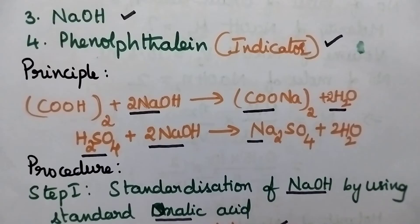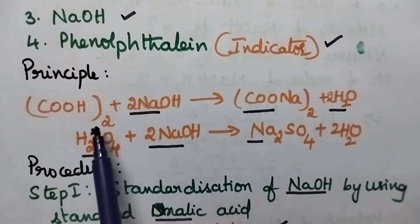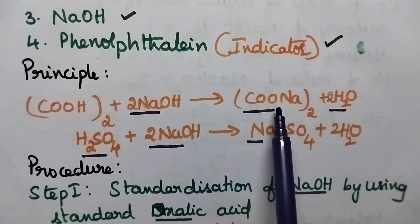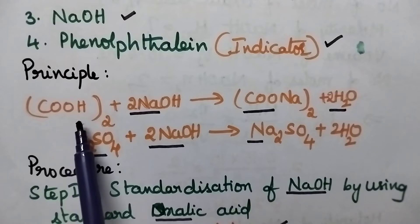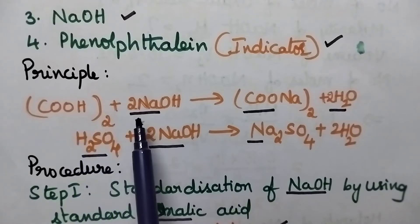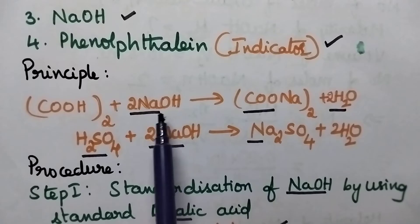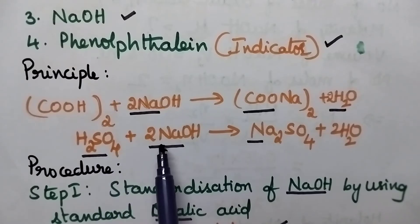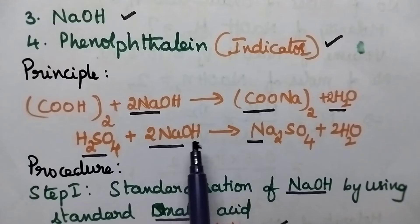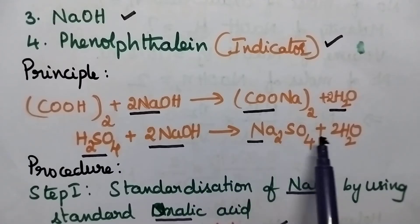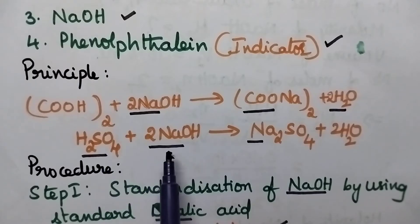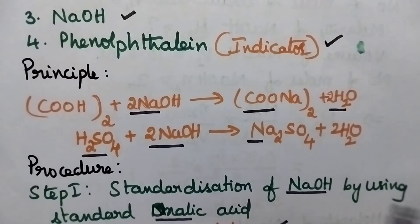Coming to the principle involved here: whenever oxalic acid is titrated against NaOH solution, it results in the formation of sodium oxalate and water. The number of moles of oxalic acid is equal to 2. Similarly, whenever sulfuric acid present in the lead acid battery is titrated against NaOH solution, it results in the formation of sodium sulfate and water. Here also, the number of moles of acid is equal to 2 and the number of moles of sodium hydroxide is equal to 2.